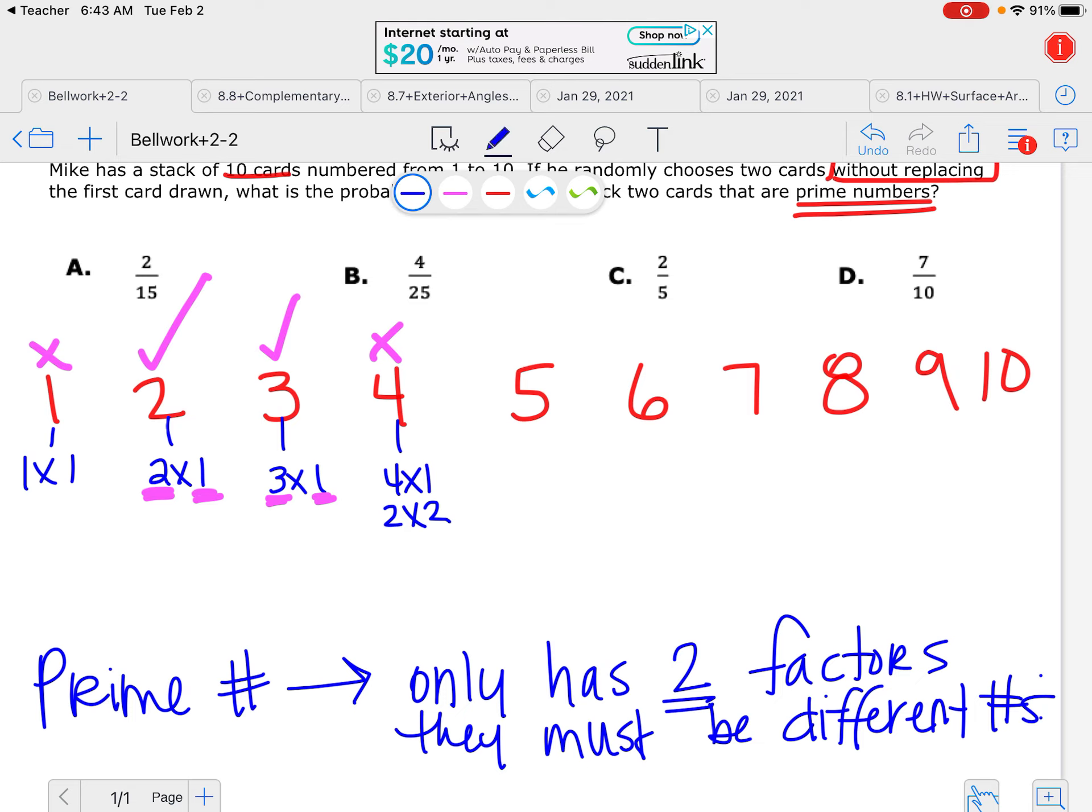Okay, on number 5, you could do 5 times 1, but then there's nothing else that makes 5. So that works. Then for 6, you can do 6 times 1, but then you can also do 3 times 2. So that's too many numbers. Number 7, 7 times 1, and there's no other way to make 7. So this shows me that I just have two separate factors, so that counts.